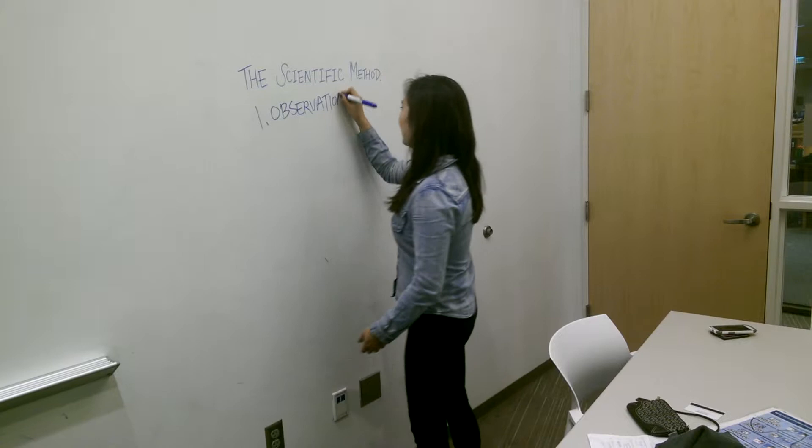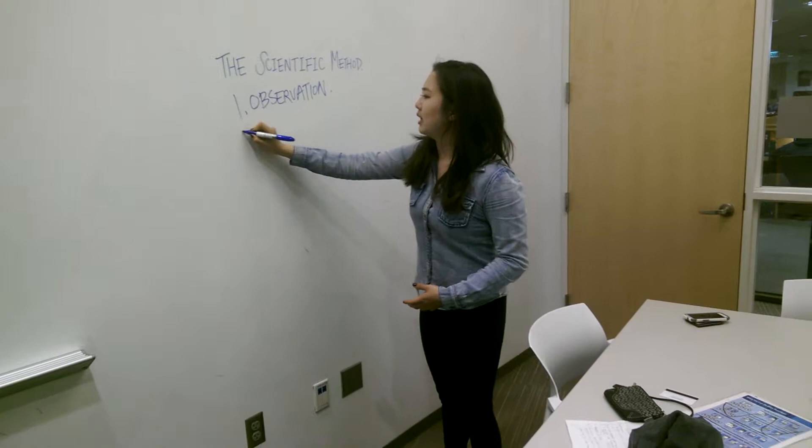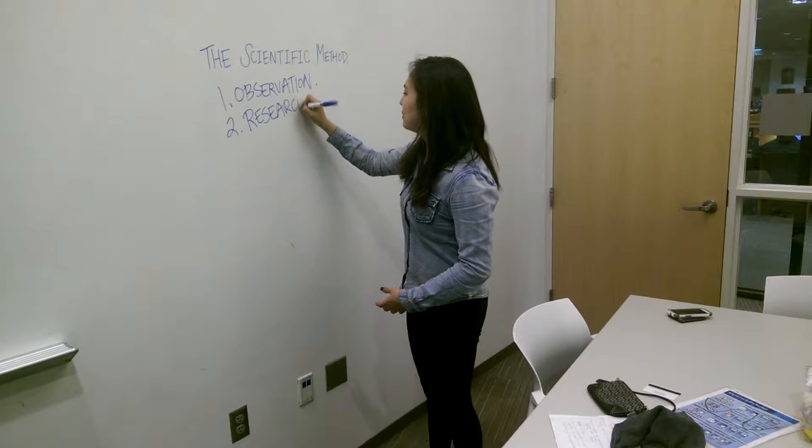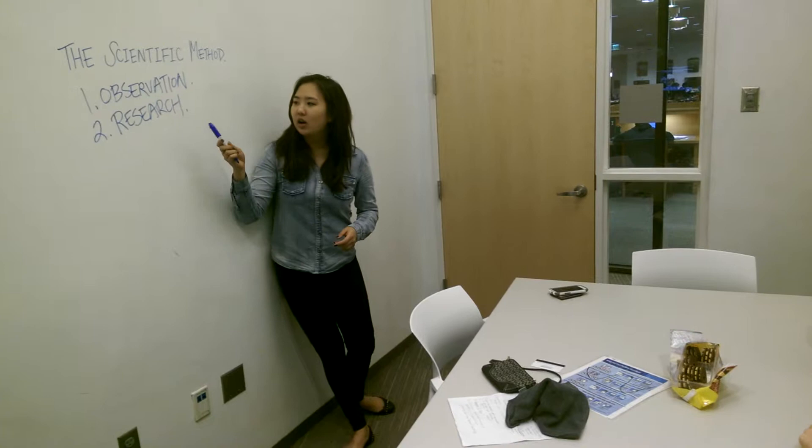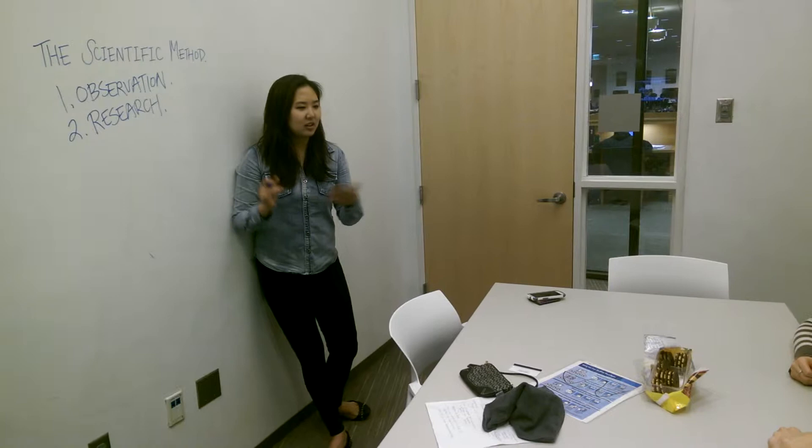It's good to have an idea of what kind of question you want to ask, but it doesn't have to be completely specific yet. So observation, and then second is research. What types of things do you think you would have to research in order to figure this out? How would you approach this? You could look on the internet, you could look in books, ask teachers, and whatnot, just to figure out what kind of materials people use to keep their cans cold.